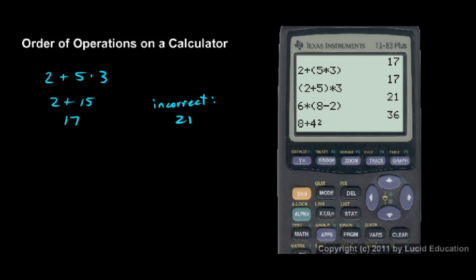8 plus 4 squared. The calculator knows to do exponents first, so it's going to evaluate the 4 squared before it adds that to 8. So 4 squared is 4 times 4, which is 16. This will be giving us 8 plus 16, which is 24. And sure enough, we get 24.